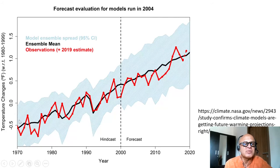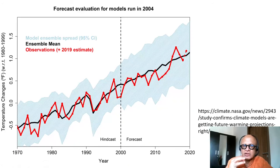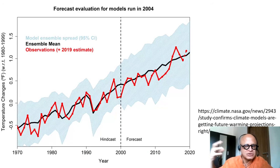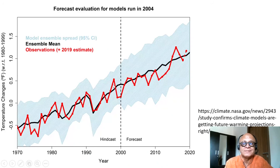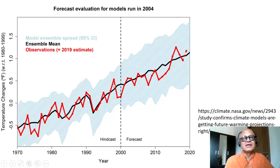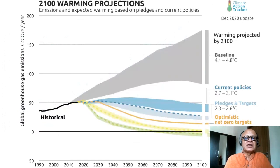The model ensemble mean shows some similarity in inter-annual or year-to-year variability, but much better agreement in terms of the overall trend. A model has its own internal dynamics — it takes energy from the Sun, moves it around into the ocean, melting glaciers, vegetation, atmospheric circulation, and so on — so it doesn't necessarily have the same year-to-year variability as the real world. For example, the real world had a strong El Niño in 1997–98, but the model's year 1997–98 may not have the El Niño at the same time. Despite all those details, models are getting better at global average temperature projections.